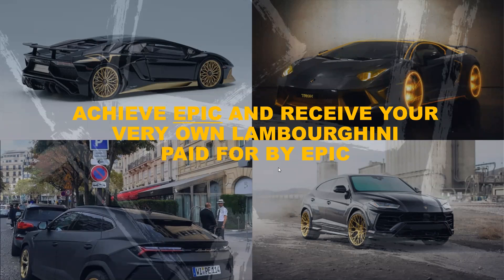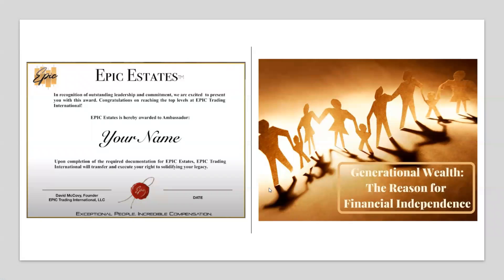If that wasn't enough, just reach the rank of Epic and the company on its tab is going to give you your very own Lamborghini — black and gold — fully paid for by Epic Trading. It makes sense to be Epic; you want to go from average to Epic. And check this out — this is one of the best things about this company. We talk about financial freedom, financial independence, and generational wealth — and Epic Estates just takes the cake. You can build your business and feel confident that in the event something happens to you, you can pass your business down to your family. This is how we create generational wealth — so that if you're generating $10,000, $20,000, $50,000, or $100,000, you can literally will your business down to your family. That is a big deal.